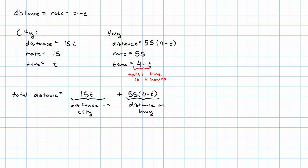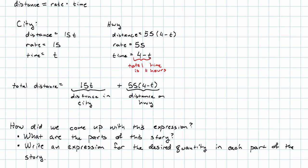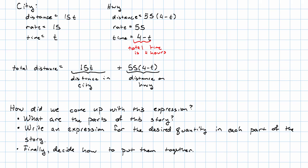How did we come up with that expression? What questions did we need to ask ourselves to come up with the expression? Well, the main question we had to ask ourselves was, what are the parts of this story? Then we separately wrote an expression for the desired quantity in each part of the story. And finally, we decided how to put them together. In this case, we put them together with addition.